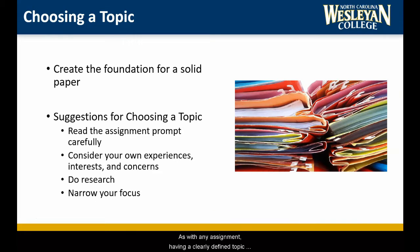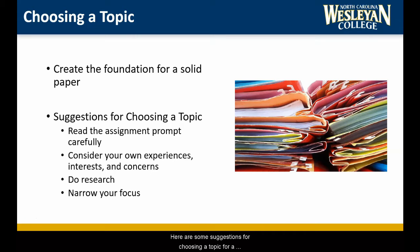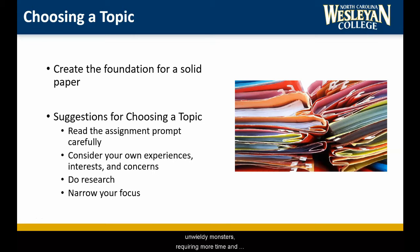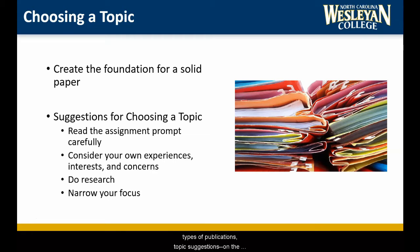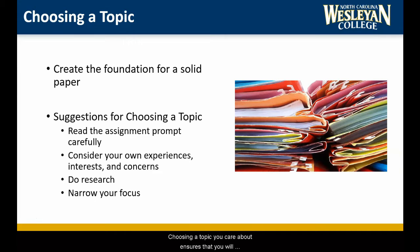As with any assignment, having a clearly defined topic creates the foundation for a solid paper. Here are some suggestions for choosing a topic for a literature review. First, read the assignment prompt carefully. Because literature reviews require the reading and discussion of many outside sources, they can easily become unwieldy monsters requiring more time and pages than you are able to devote to them. Your professor may include topic limitations — things like timeframe, number of sources, types of publications, and topic suggestions — on the assignment sheet to help you avoid becoming overwhelmed. Consider your own experiences, interests, and concerns. Choosing a topic you care about ensures that you will be more inclined to do the work needed to fully develop your review.